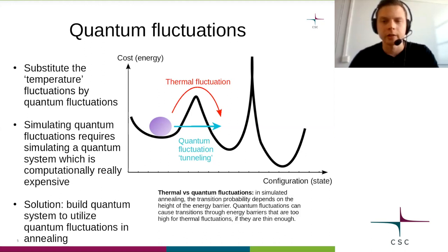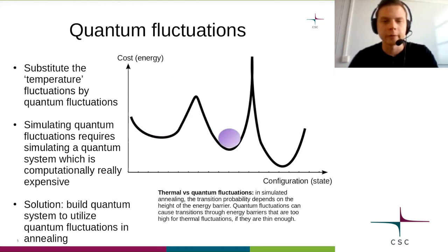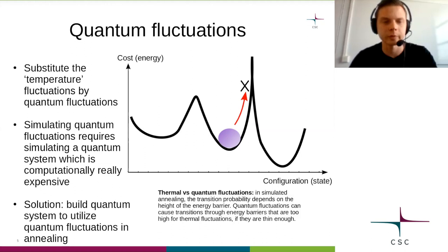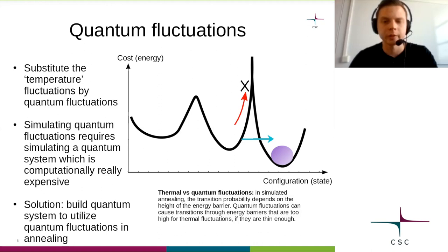For quantum fluctuations, the height of the barrier doesn't matter that much as it does for thermal fluctuations. The width of the barrier — that is how close the other state is — however affects whether a quantum transition happens or not. Because of this feature, quantum fluctuations might perform better in some cases where the function has some high but thin energy barriers, which might be too high for the thermal fluctuations. In these cases, the quantum fluctuations could still tunnel through just by appearing on the other side. However, simulating this quantum fluctuation is more computationally expensive than using the thermal fluctuation model. But if one could build an appropriate quantum system, these fluctuations would not be simulated, but actually happen physically.